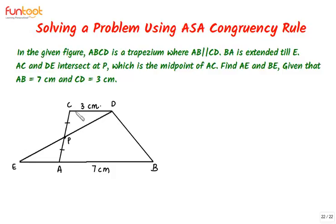Let's see the approach for solving this question. CD is given to be 3 centimeters and we need to find a relationship connecting CD and AE. The problem can be solved through congruency, because it establishes relationships between corresponding parts of two triangles. The congruency rules we know require three pairs of corresponding parts. P is the midpoint of AC, so AP equals PC.